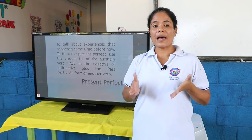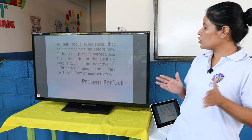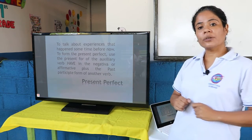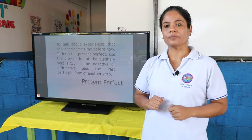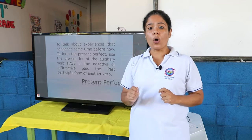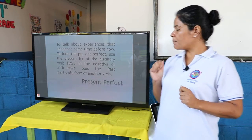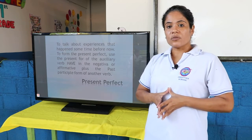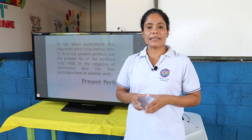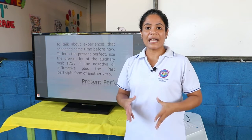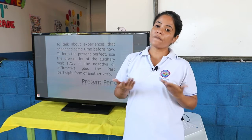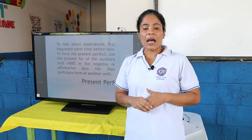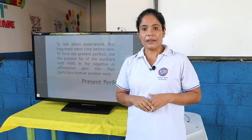To form the present perfect, we have to know that we are going to use the auxiliary verb "have" in the negative or affirmative form, plus the past participle of the verb. Cuando nosotros hablamos también del presente perfecto, tenemos que saber que vamos a utilizar el verbo auxiliar have, ya sea en forma afirmativa o forma positiva, más el pasado participle del verbo.